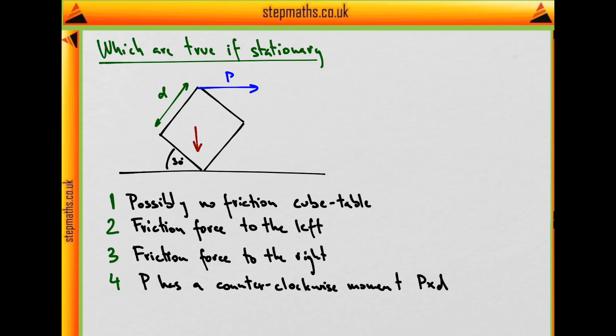And now because it has to stay stationary, the whole cube, there also must be some sort of force to the left of magnitude P to counteract that force. And the only place where it can act is friction on the bottom edge. So two is definitely true, and that makes one and three incorrect.